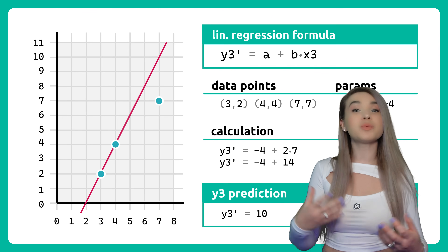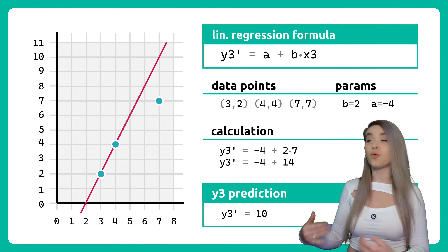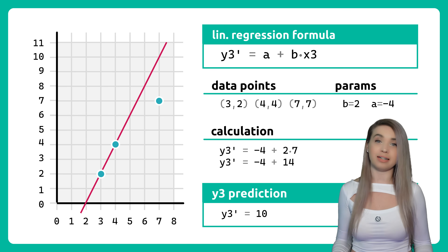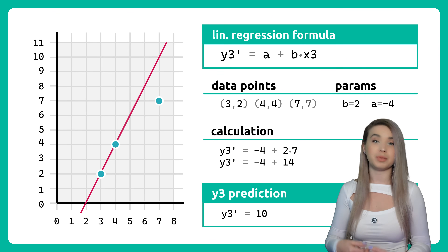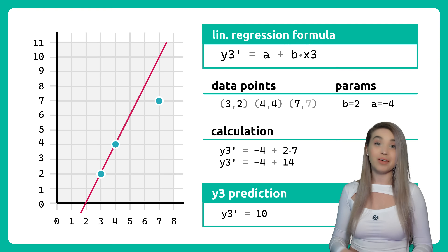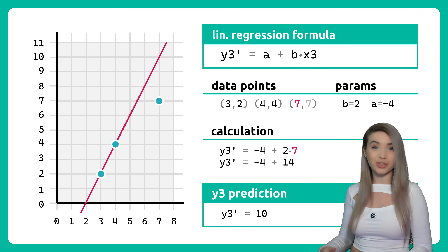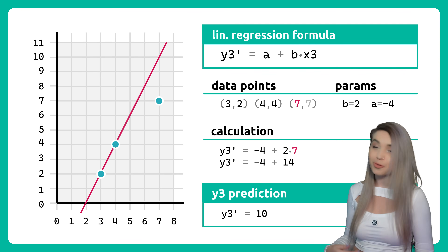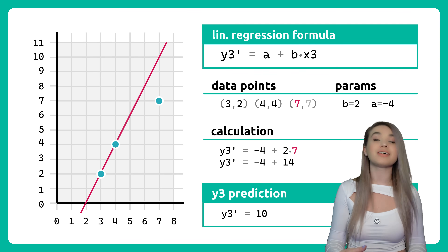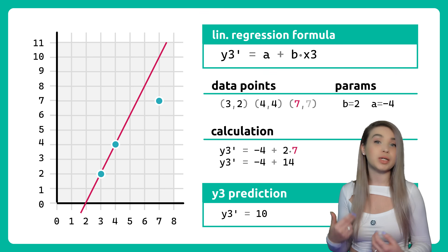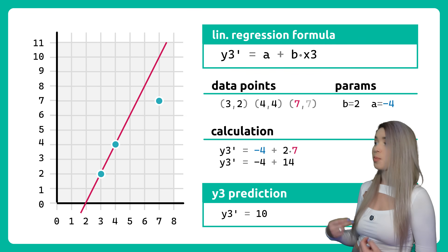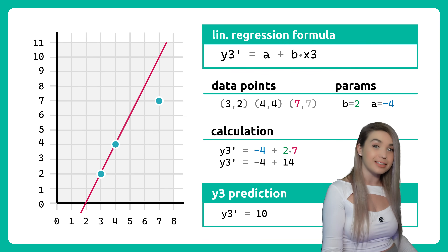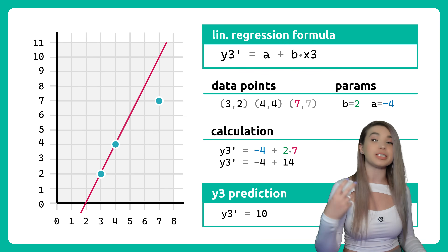For this, we will first predict the y of x like we have no idea that it's supposed to be 7. We will plug in the x3 of 7 into our formula, giving us the y3 prediction of minus 4 plus 2 times 7, which is of course 10.